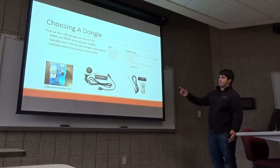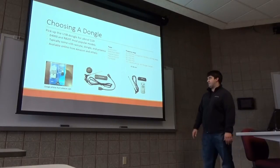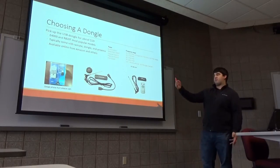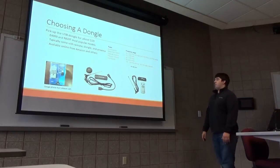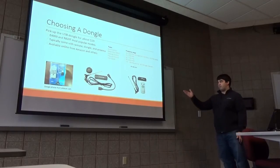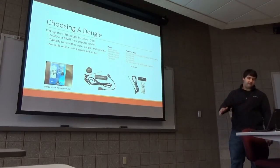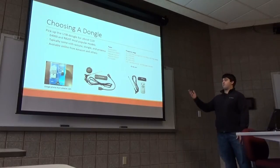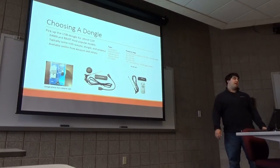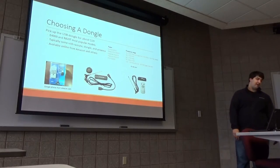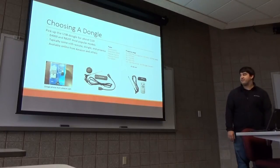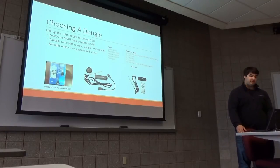These are some of the different packages they come in — nothing too different, that one's smaller obviously. They come with a remote, a little antenna (which is not good for what we're going to use it for), and the dongle itself. They're about $20. You can get them online on eBay, Amazon, all over the place. It's a pretty big phenomenon in the hacker world, so they're pretty cheap.